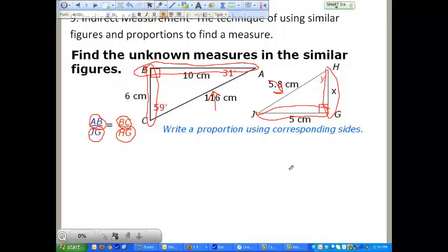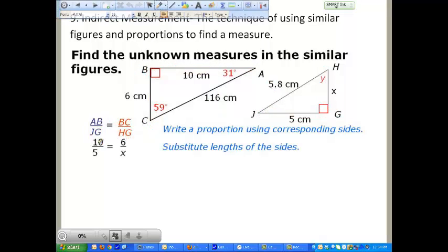Now that we've got our proportion set up, showing what they are, we're going to take and fill each of these values in. AB, you see right here is 10 centimeters. JG, right here is 5 centimeters. BC, 6 centimeters. And HG is our unknown, our X value. Now this should look very familiar to you. We've worked problems like this for a couple of days during this lesson. And you've got the ratio of 10 to 5 compared to a ratio of 6 to X. We know that they're proportional because we've been told that yes, these are similar figures.